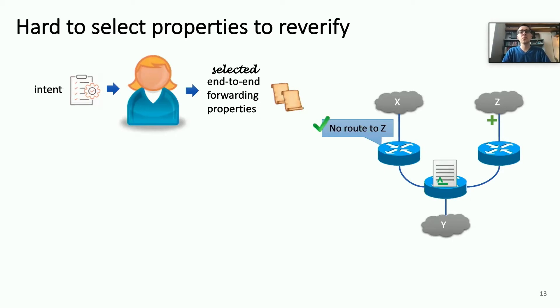The second limitation of existing control plane verifiers is that engineers have to decide which properties they're going to re-verify when they invoke the verifier on subsequent snapshots. Now, some properties to verify are obvious. They relate directly to the intent of the change. For example, suppose a network engineer wanted to confirm that a change in route filters on this center router has the intended effect of restricting access from X to a new subnet Z. So, it seems obvious then that we should check reachability between the restricted subnet X and the new subnet Z.